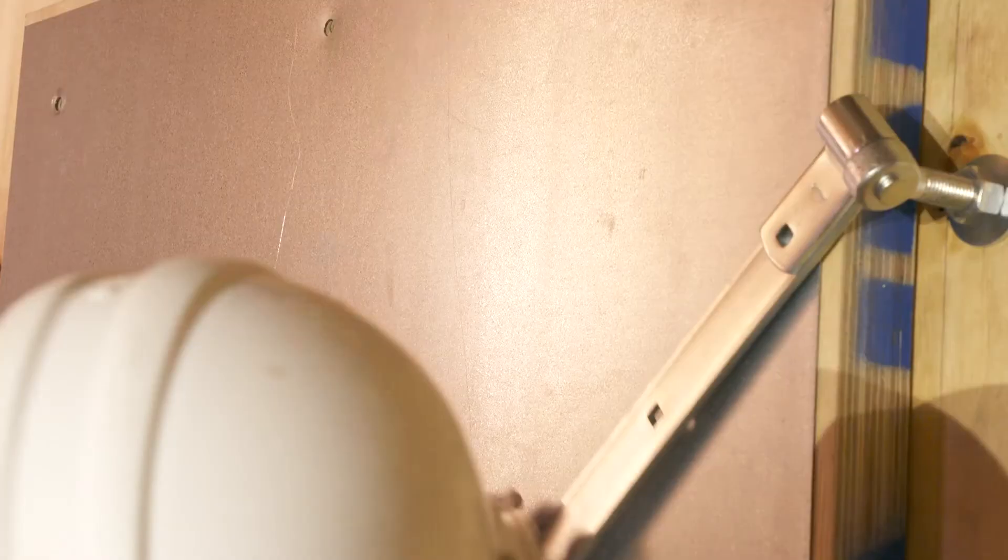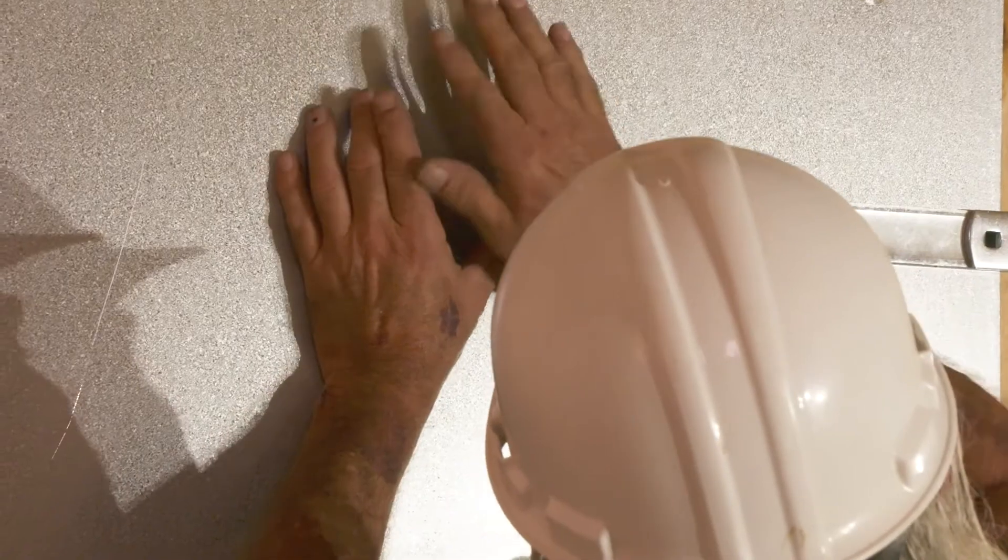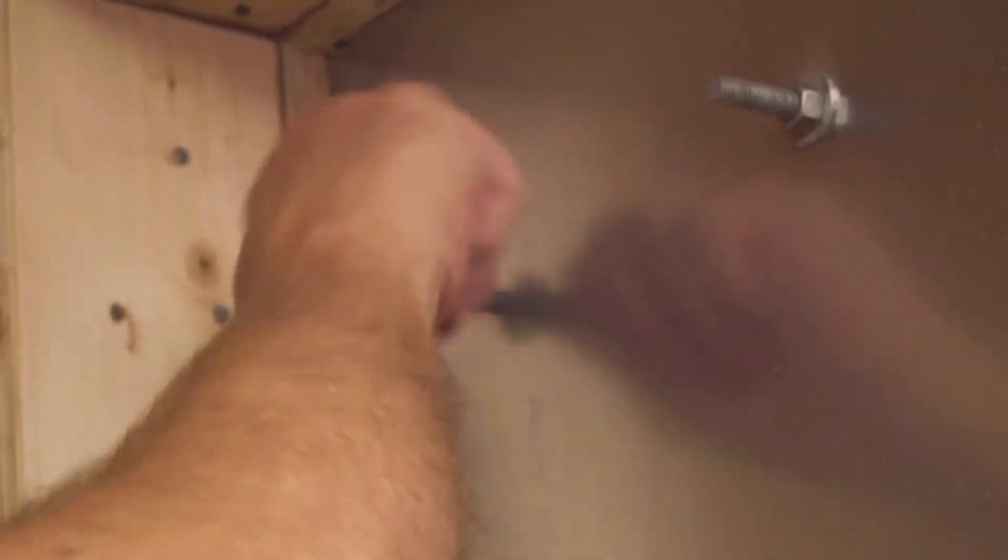Attach the bottom hinge using two bolts, but do not tighten all the way. Then slide the top hinge onto the corresponding bolt hook and bolt the hinge onto the door's exterior. Be sure the screws are not tightened all the way either.